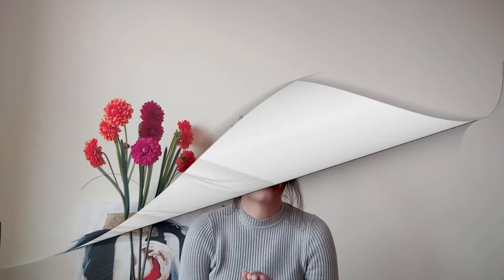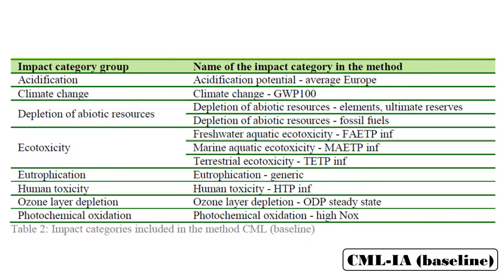The CML method was created in 2001 by the University of Leiden in the Netherlands. The method is defined for the midpoint approach and is divided into baseline and non-baseline. The CML baseline covers the most common impact categories used in LCIA, and each impact category group could arise with different names — for example, in ecotoxicity, the term is subdivided into three: freshwater aquatic, marine aquatic, and terrestrial ecotoxicity.